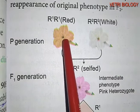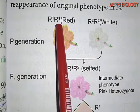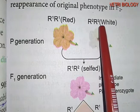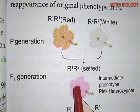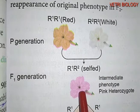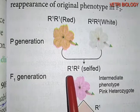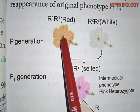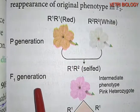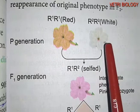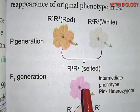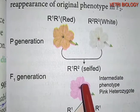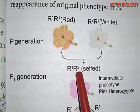The genotype of the red color flower is R1R1. The genotype of the white color flower is R2R2. In the F1 generation, the phenotype of the F1 hybrid is heterozygous pink, with the genotype R1R2. According to Mendel's law of dominance, we would expect red color in F1, but here we get an intermediate pink color.